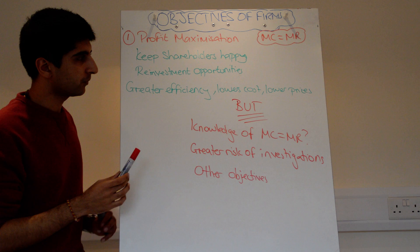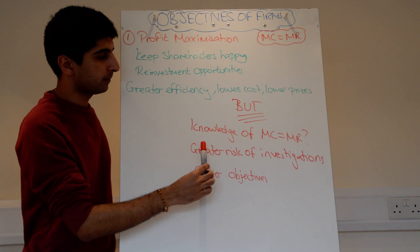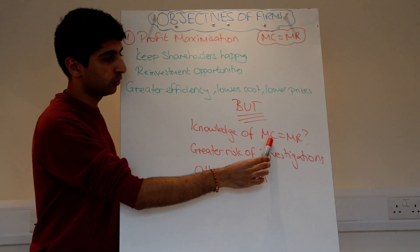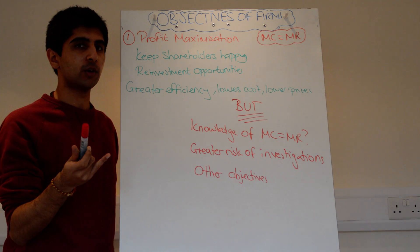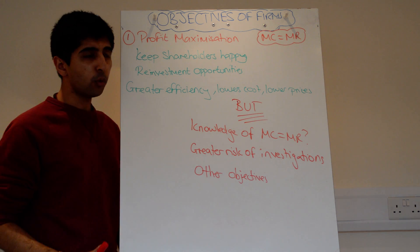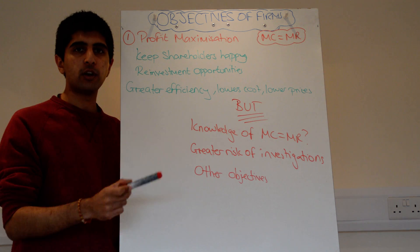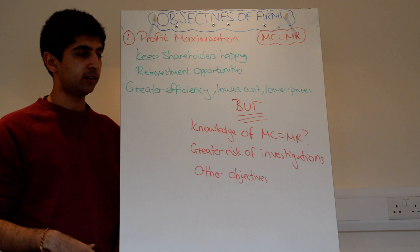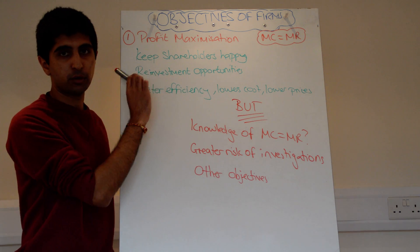But in truth, it might not be the case. Why might a firm not profit maximise? What if the firm doesn't know where its marginal cost equals its marginal revenue? It's very difficult to work out a firm's marginal cost — in economics, marginal cost includes physical cost but also opportunity cost. More realistically, firms tend to use cost-plus pricing: they work out their long-run average cost position and stick on a margin, maybe 10%, to give themselves a profit.